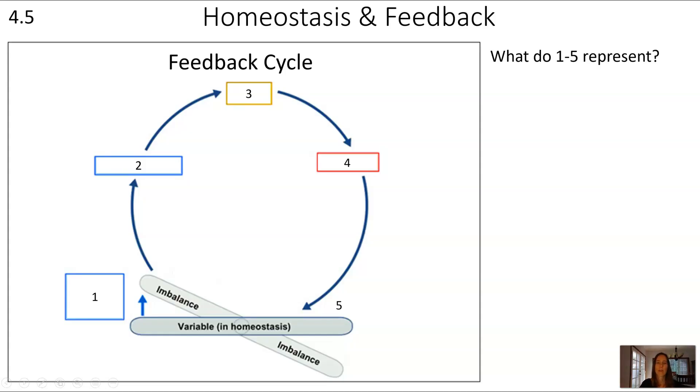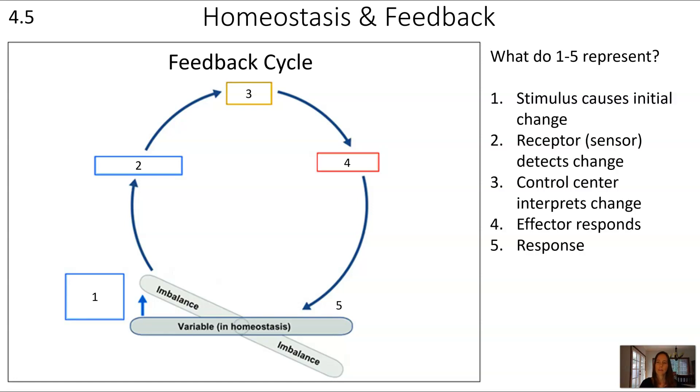Here is a picture or diagram of a feedback cycle. I want you to figure out what 1 through 5 might represent. Step 1 shows where the stimulus causes an initial change. Number 2 is that the receptor picks up that change and detects that change. Number 3 is a control center that's often going to be in your brain, and that sort of makes sense of that change. It pulls the information from this receptor as well as from other sources to figure out what to do.